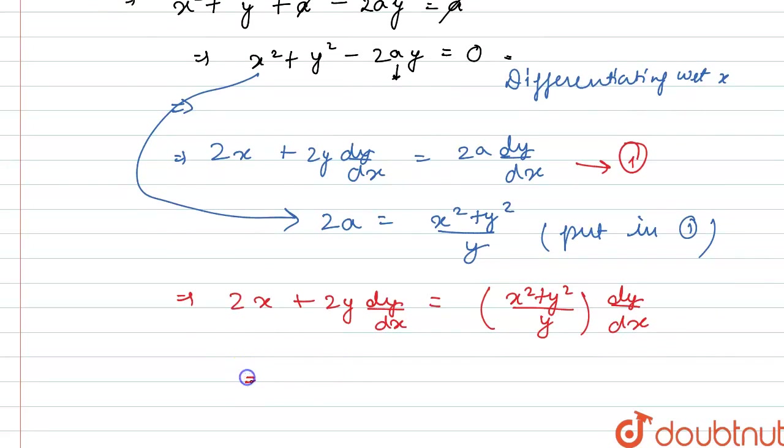Now just simplify it more. What we will get is x square minus y square into dy by dx equals 2xy. Yeah, so this is the required differential equation. Thanks for watching.